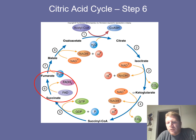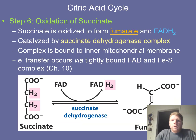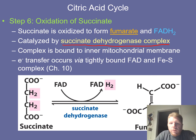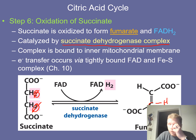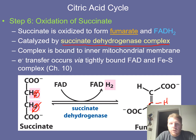That succinate is going to be utilized to produce FADH2. The enzyme known as the succinate dehydrogenase complex removes one hydrogen from each carbon, producing fumarate — a carbon-carbon double bond with two carboxylic acids on each end. This complex is bound to the inner mitochondrial membrane. We generate FADH2 via the succinate dehydrogenase complex.